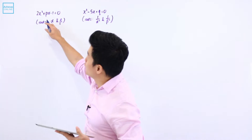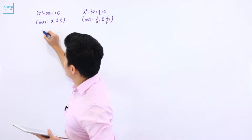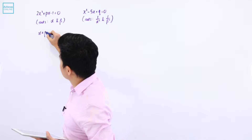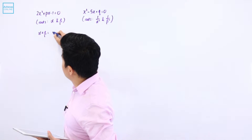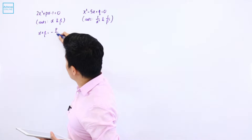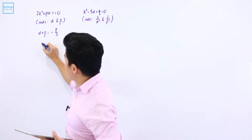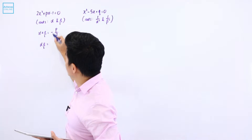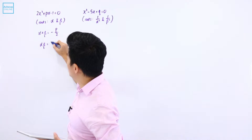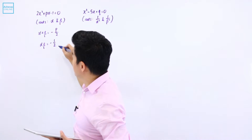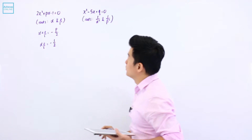Alpha and beta are the roots of this equation. That means alpha plus beta is going to be equal to minus P over 2, and alpha beta is going to be minus 1 divided by 2, so it is minus 1 over 2.